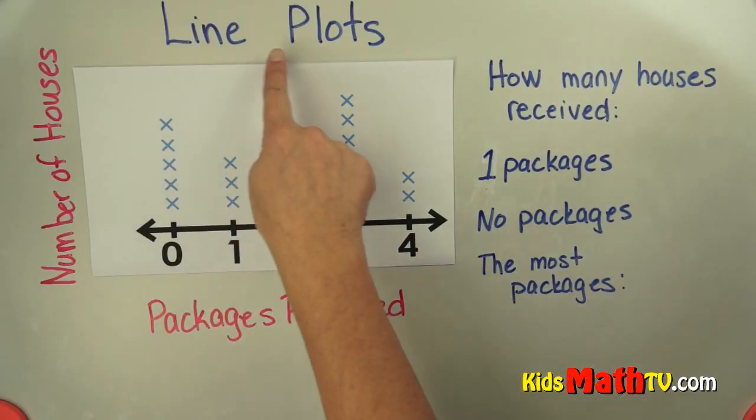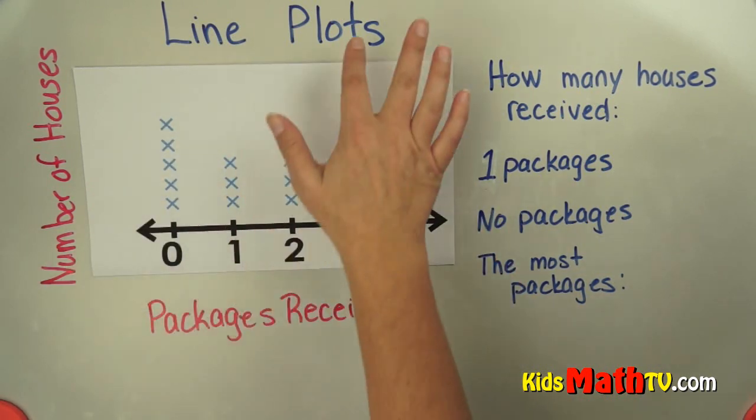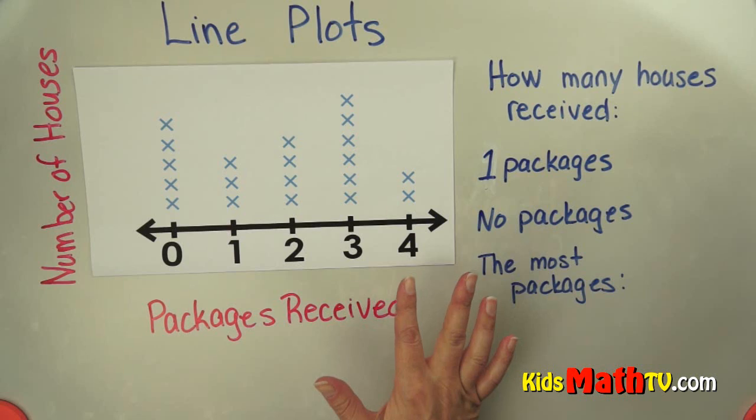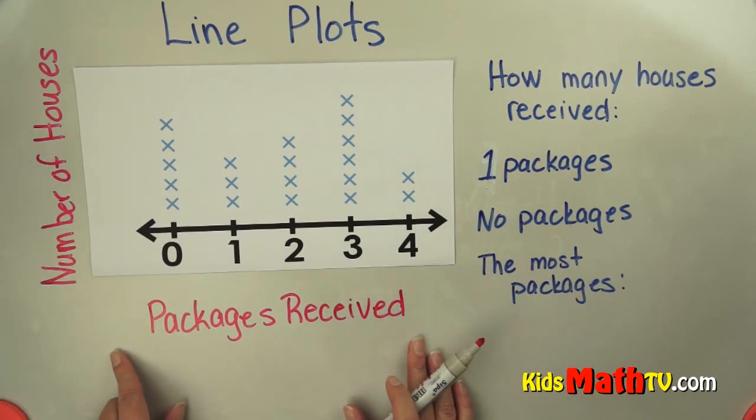In this lesson you will learn about line plots. Here is some information that has been plotted onto this line. This is information about a community and they received a number of packages between Thanksgiving and Christmas. In this community there are a certain number of houses and there are packages received. This is the number of packages received.